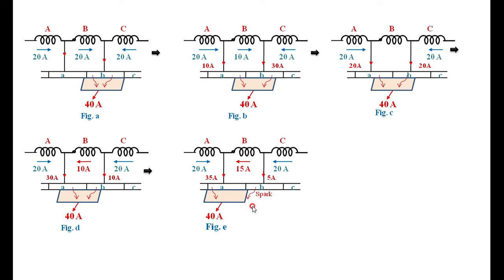If it is called as ideal commutation when changing from 20 amperes to minus 20 amperes. If the change is from 20 amperes to minus 15 amperes, therefore it is called as under commutation.